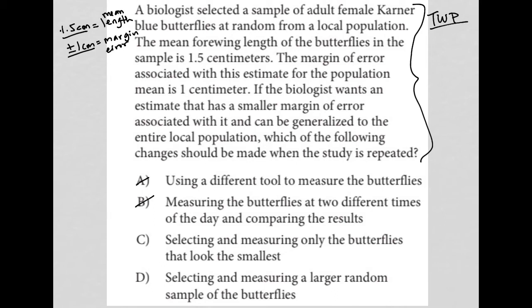Choice C, selecting and measuring only the butterflies that look the smallest. Well, what are we looking for? We're looking for a smaller margin of error. So selecting and measuring only the butterflies that look the smallest would possibly give us a smaller margin of error, but it would not give us information that can be generalized to the entire local population. There's a bit of good with this answer choice, but it doesn't fit for population-wide data. It would just lower our margin of error, but not be indicative of anything about the entire population.